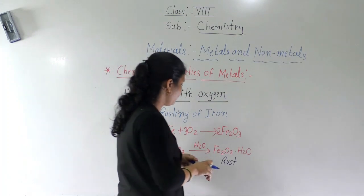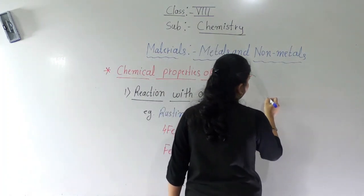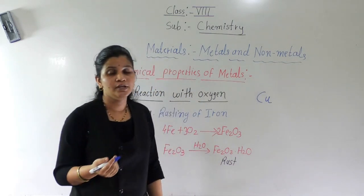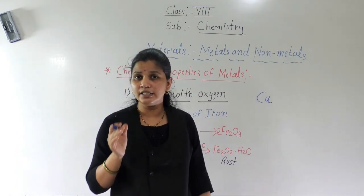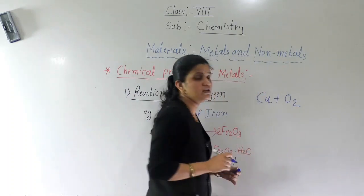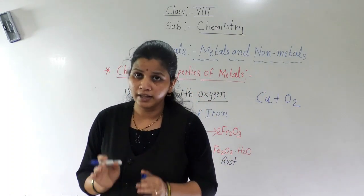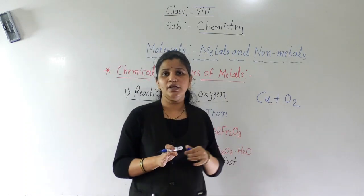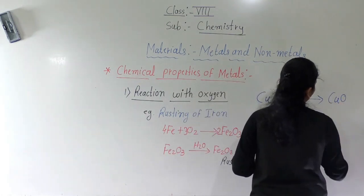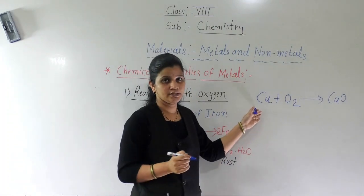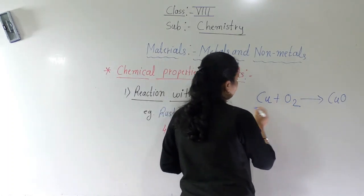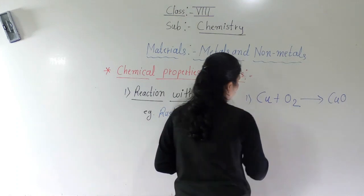The next example: suppose you take copper. Check your reactivity series — copper is the least reactive. So for copper to react with oxygen, you need strong heating, then only it will start burning. It needs strong heating, then copper oxide is formed. Balance this equation — some students know about balancing equations.